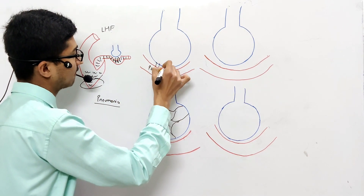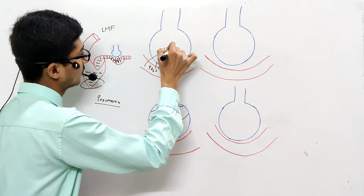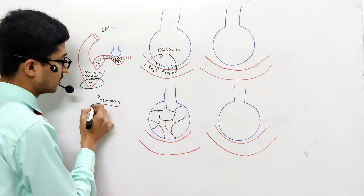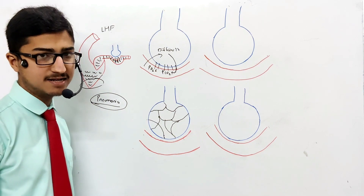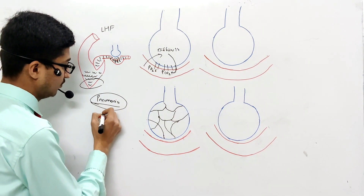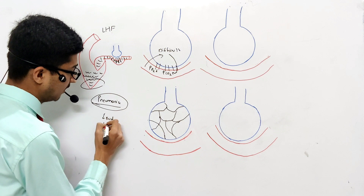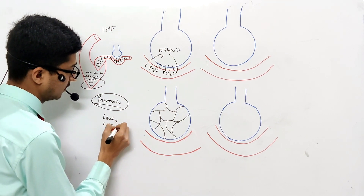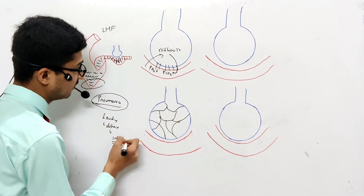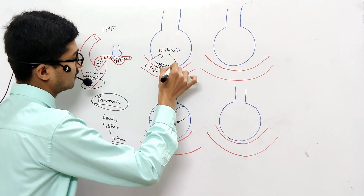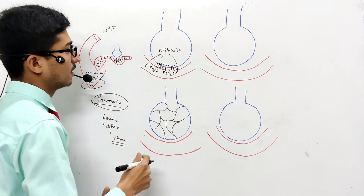Due to the excessive blood, fluid oozes out, and this makes our respiratory membrane thick, so the exchange of gases becomes difficult. The second condition is pneumonia. When pneumococcal bacteria enter the body, as an immune and defense mechanism, inflammation starts. Due to inflammation, the respiratory membrane becomes thick and the exchange of gases becomes difficult.